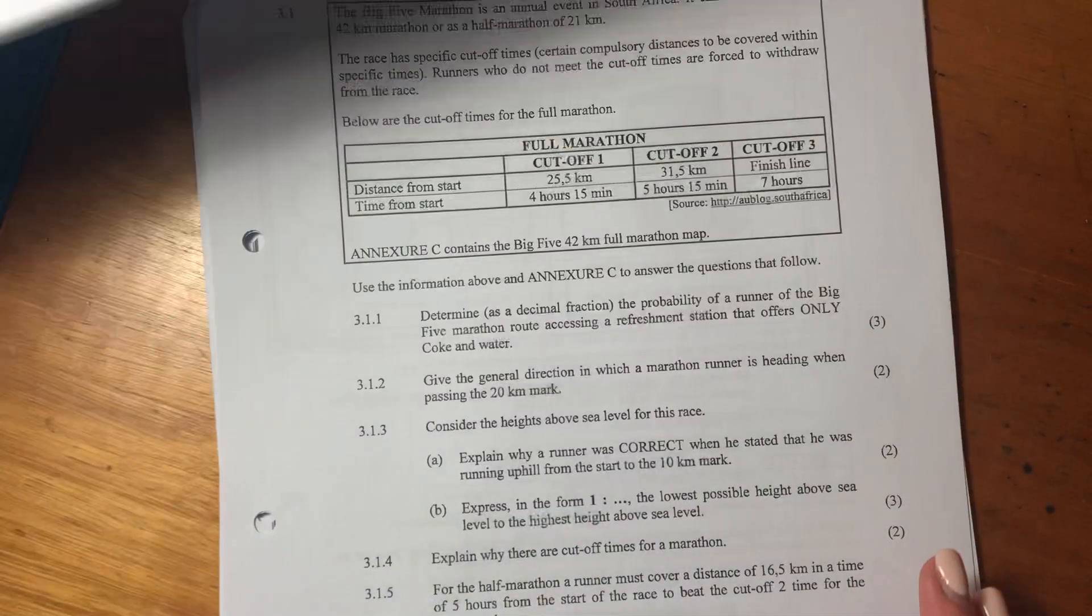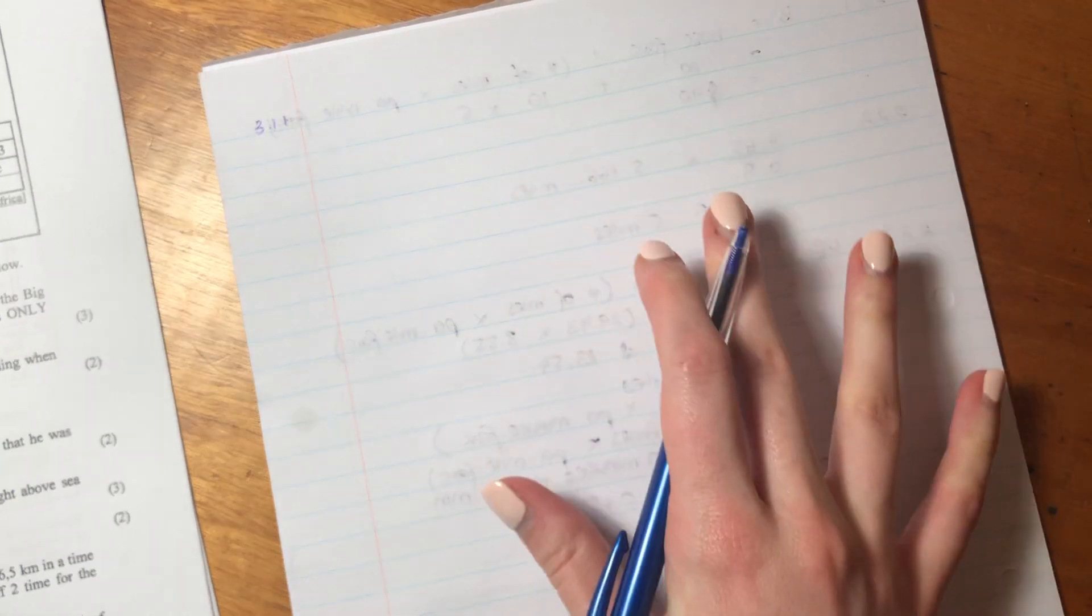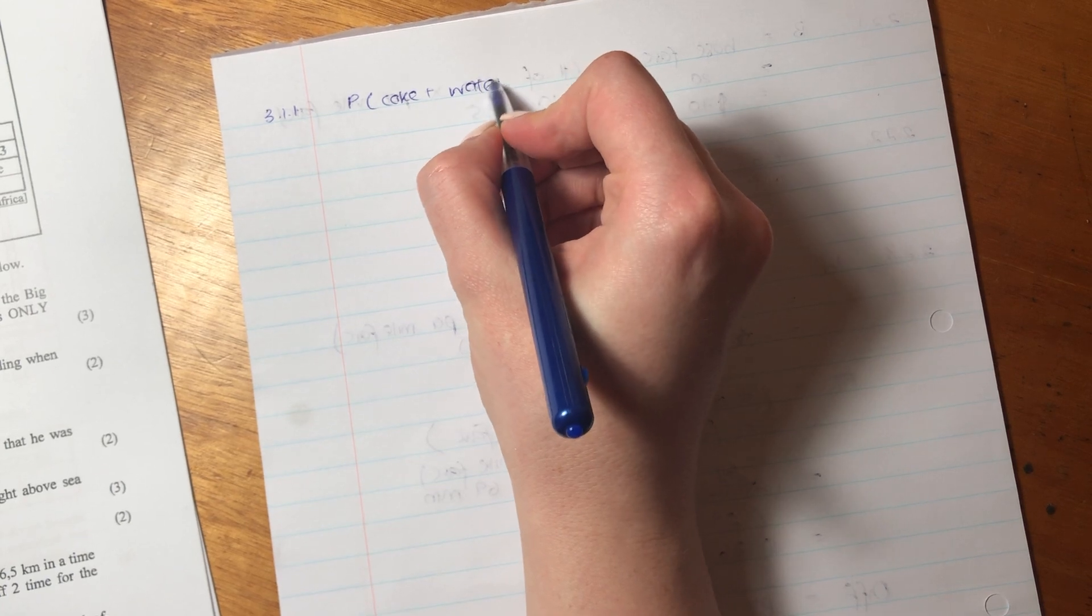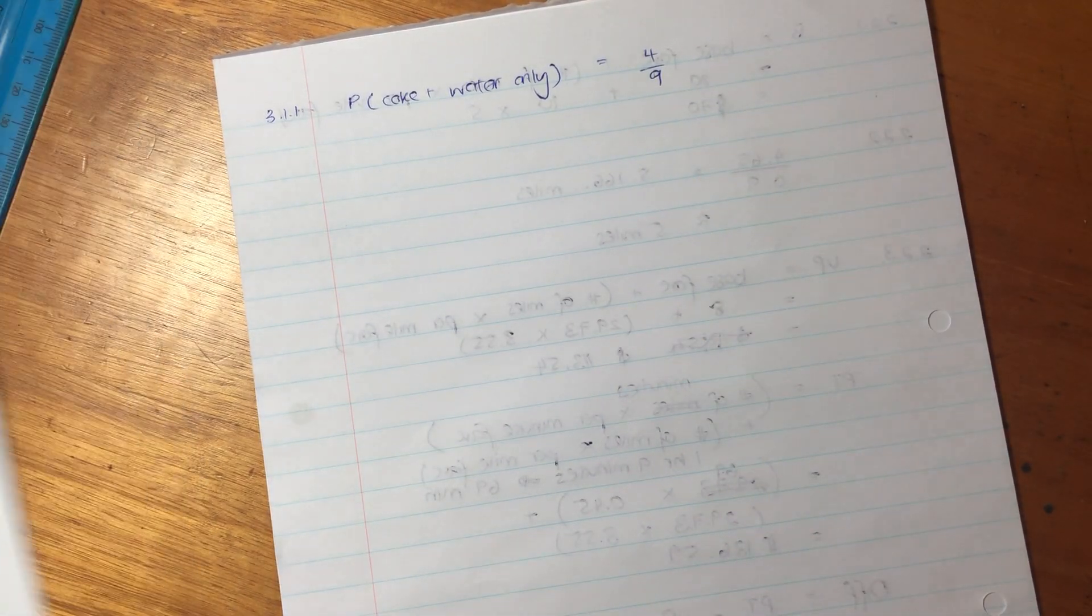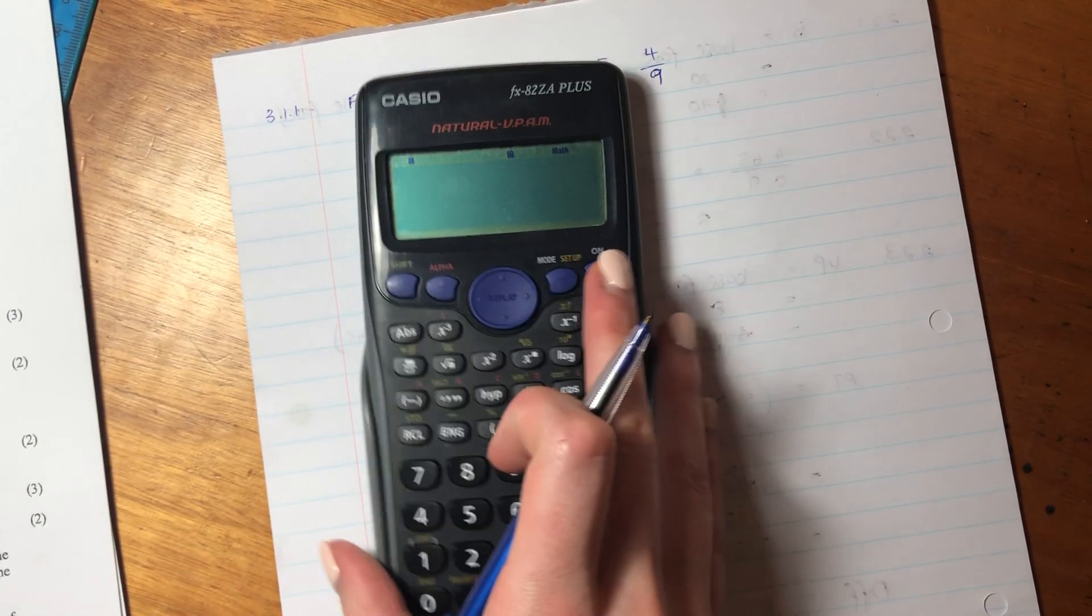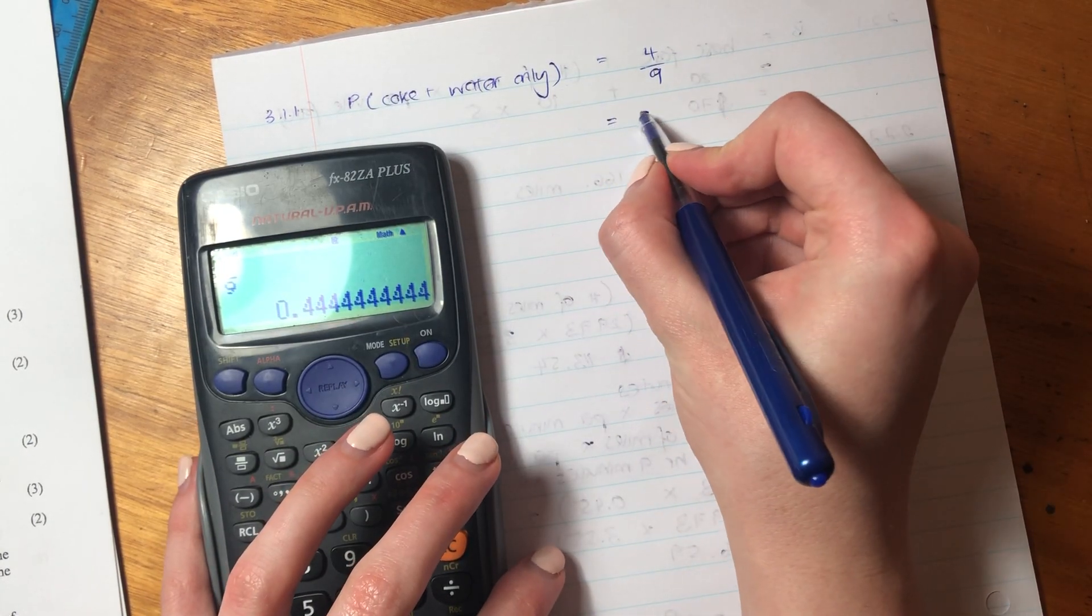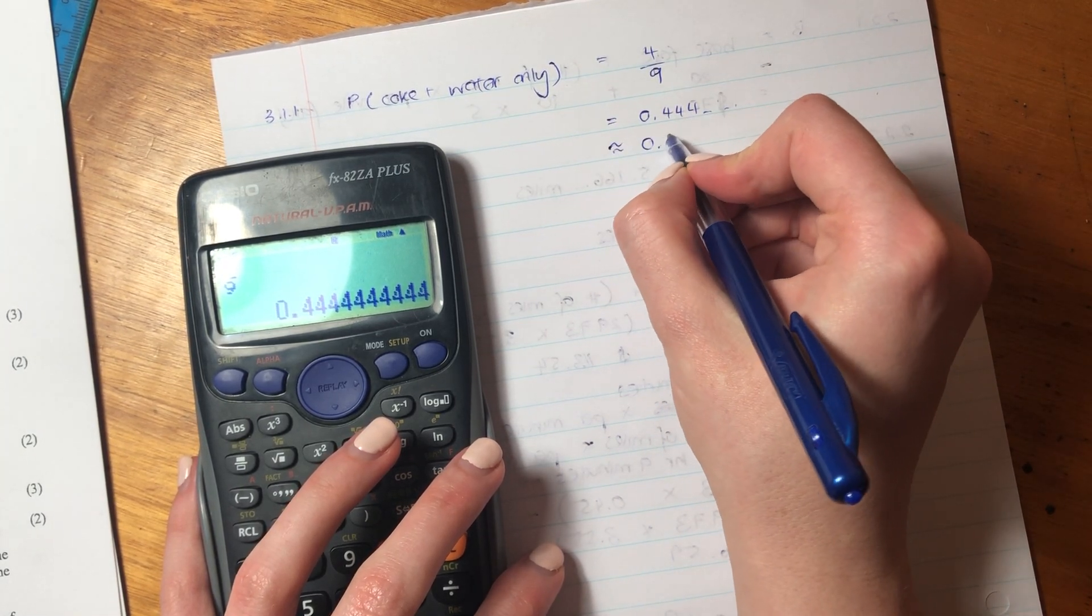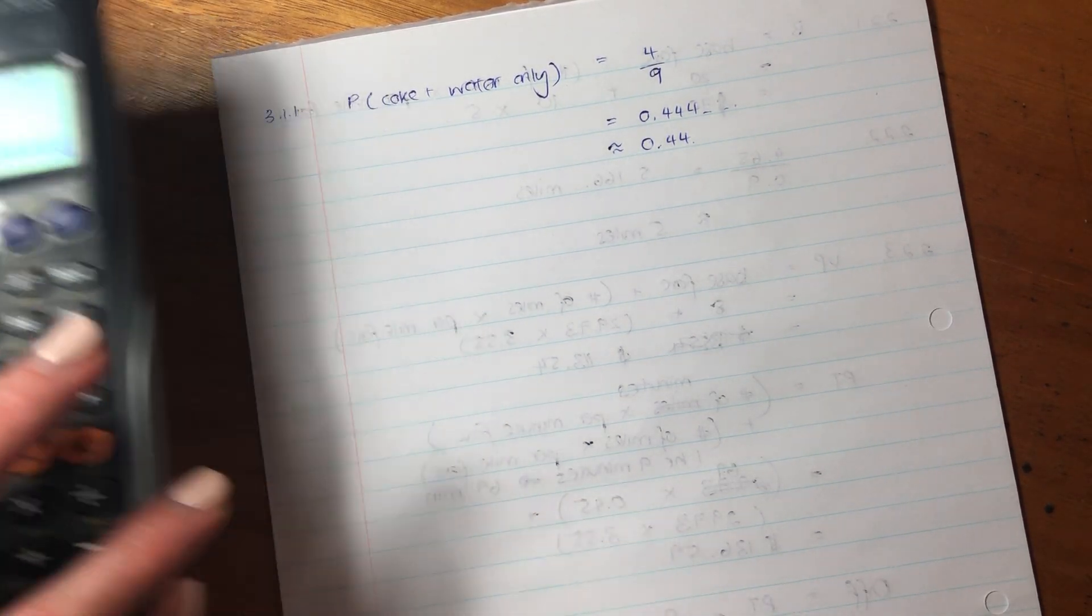So that's going to be our probability. Our probability, let's write this nicely over here, 3.1.1. So our probability of coke and water only is four over nine. Now, that is not our final answer because they asked us to put it in a decimal. So you have to say four over nine and put it into a decimal and it is 0.444. So you can just say it's equivalent to 0.444. So just round it off. So that is that question done and dusted.